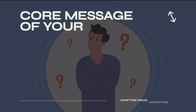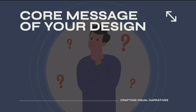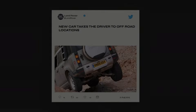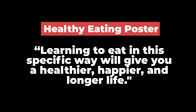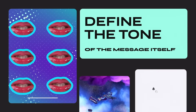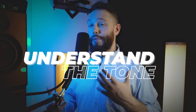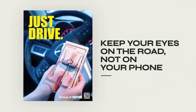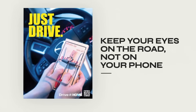Before creating a visual narrative, we need to define the message of the project. Ask yourself: what is the core message of your design? It might be to create a positive change in the viewer, or perhaps a new car that takes a driver off-road to locations they've never seen before. Find the deep-hearted message and put it into one sentence. Also linked to this is defining the tone — it might be serious, playful, or informative — and knowing the tone sets the foundation for your design.